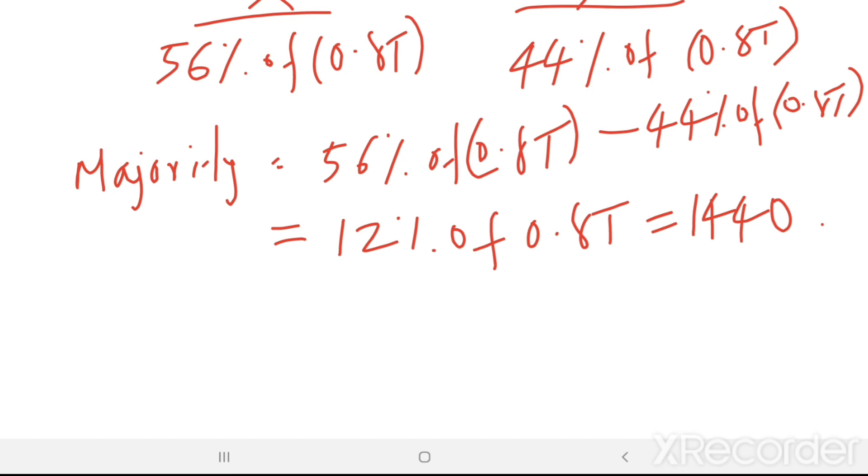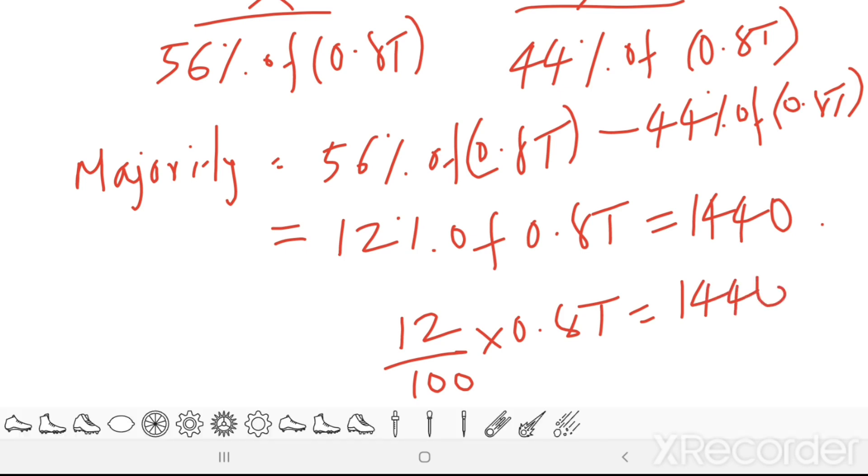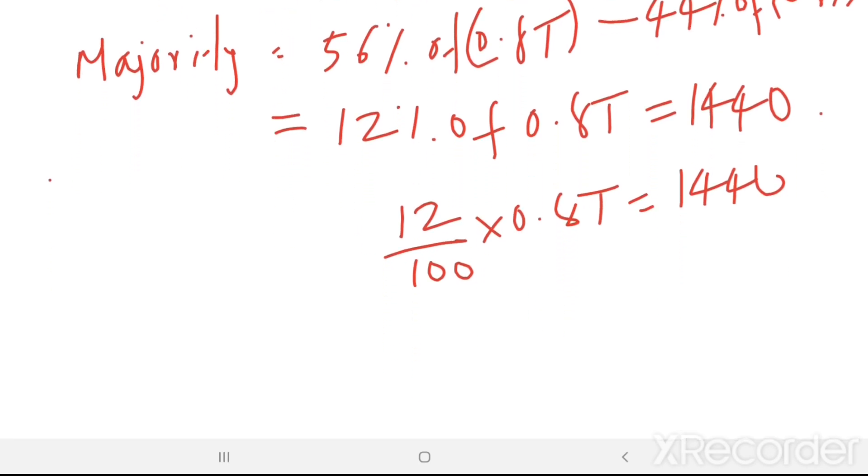So, 12% means 12 divided by 100 times 0.80T equal to 1440. From here, we get T equal to 15,000.